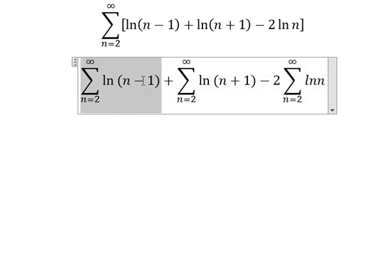Next, when n equals 2 we have ln of 1. When n equals 3, we have 3 minus 1, so we have ln 2. But when n starts at the beginning with 2, this one we have ln 2.